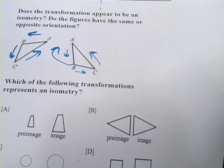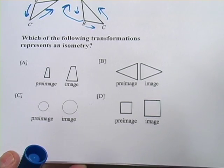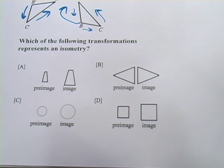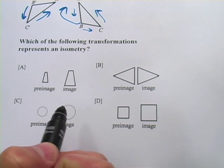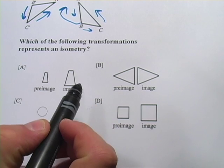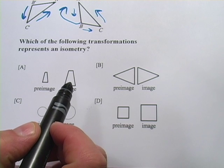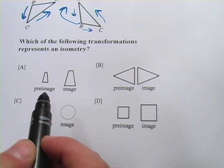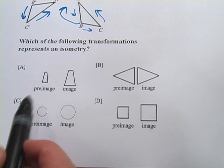All right, let's do one more here. This one says, which of the following transformations represents an isometry? And the rule to remember here is that isometries, which are those translations, rotations, and reflections, the size does not change. So this is a really easy problem.